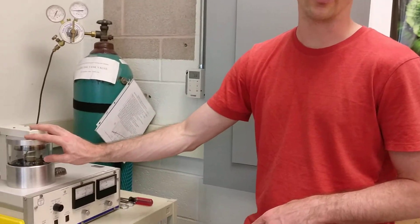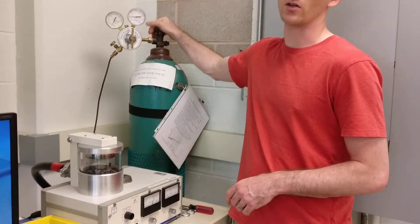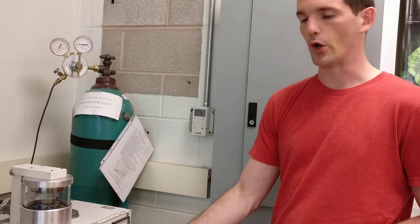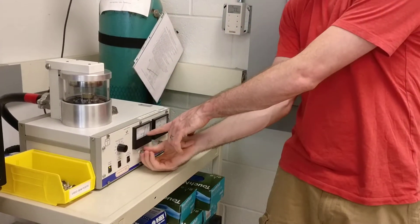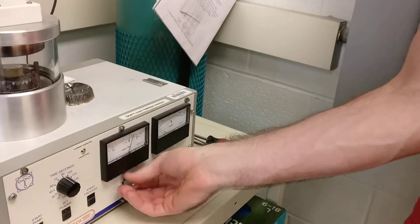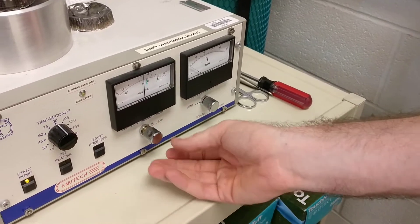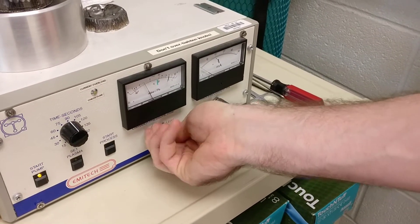Before that, we have to backfill this chamber with argon. We're going to make sure that this is all the way open. We're going to open up this leak valve and watch our pressure get higher, and then close it back up again.